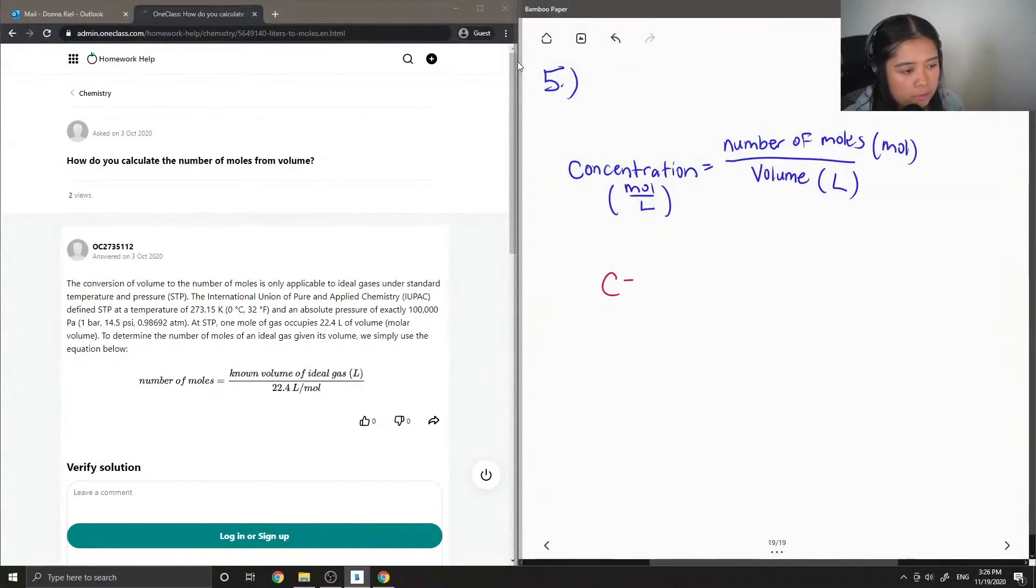So the short way of writing this equation out is simply just C equals n over V.